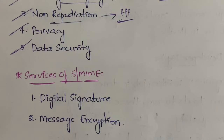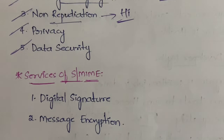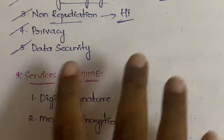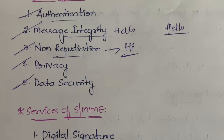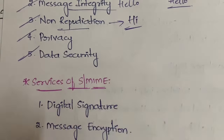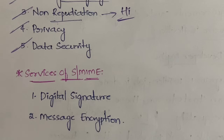The services of S/MIME include digital signature and message encryption. These have been explained in separate videos. For a short answer this overview is enough, but for a long answer of 10 or 14 marks, you need to explain each function — authentication, message integrity, non-repudiation — with a side heading, and also explain digital signature and message encryption in detail, each taking about one page.